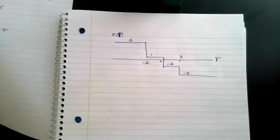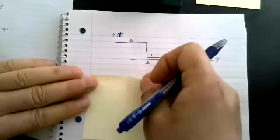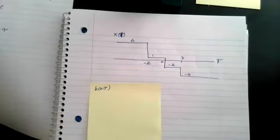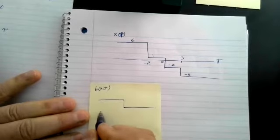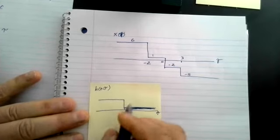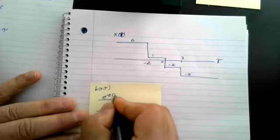I'm going to draw H of T minus tau on a sticky note so I can physically move it. The transition point is at T minus two. Once you're good at this you can mentally move it, but for now I'll literally move this piece of paper. H of T minus tau starts at T minus two and the equation is E to the minus two T minus tau.